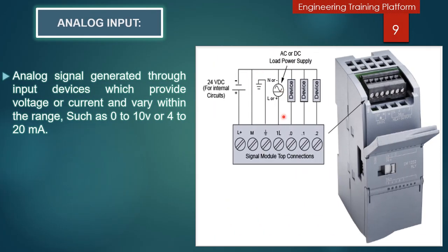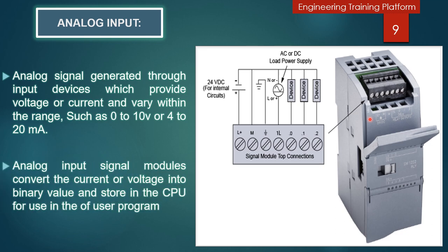The analog input signal module can be operated on a DC or AC power source. For the DC power source, the negative supply is connected to the device. If you select the AC source, on the negative side you connect the neutral, and on the positive side you connect the line. An analog input signal is generated by a sensor that provides voltage or current that can vary within a range, such as 0 to 10 volts or 4 to 20 milliamps. The analog input signal module converts the current or voltage to a binary value that the CPU stores for use in the user program. The number of bits in the binary value is referred to as the channel resolution.